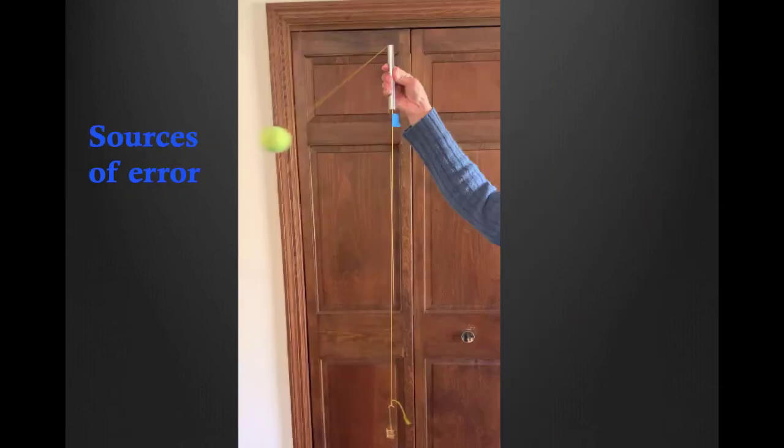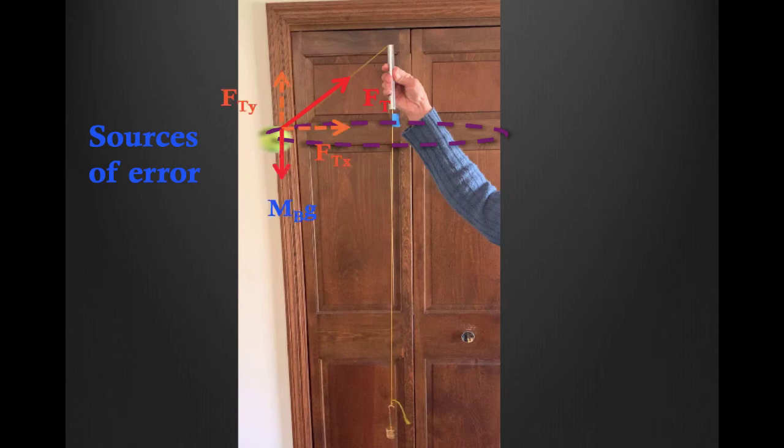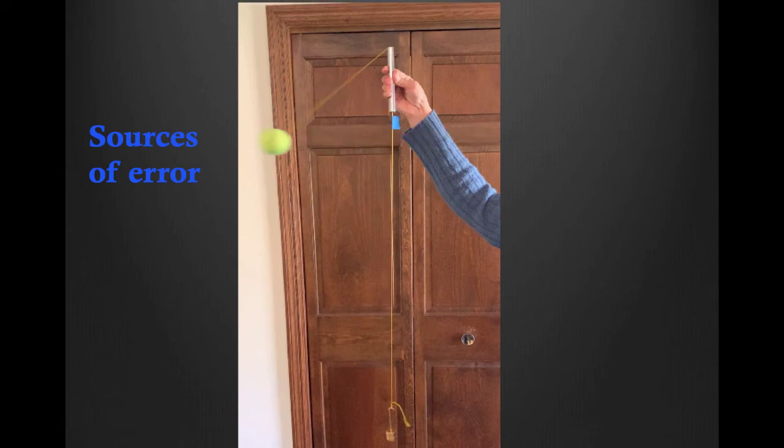What are the sources of error in this experiment? The major theoretical assumption we've made is that the string is horizontal and all of the tension force is responsible for centripetal acceleration. In reality, only the horizontal component of tension produces centripetal acceleration, while the vertical component balances the weight of the ball. Using similar geometric reasoning, the radius of the circle in which the ball rotates is not the same as the distance from the center of the ball to the top of the tube. The actual radius will be smaller. In our analysis, we also ignored air resistance and friction between the thread and the tube. Moreover, maintaining a constant radius is not easy, and the marker tape may slide up or down. If it moves up and touches the bottom of the tube, there will be friction there as well. There will be uncertainty in measuring radius and error in measuring time due to reaction time of starting and stopping the stopwatch.